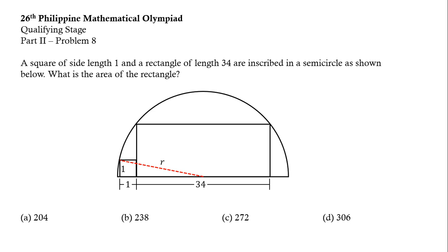The base of this right triangle is just half of 34 plus 1, so that is 1 plus 17 which is 18 units.